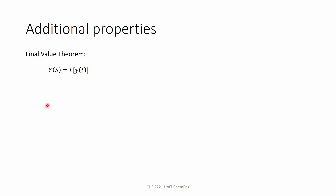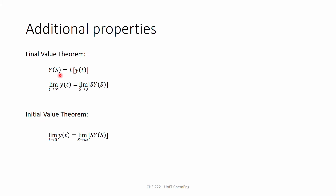The first property is called the final value theorem. What it says is: if we have a function capital Y(S), which is the Laplace transform of little y(t), and if we want to know the value of little y as time approaches infinity, we really don't need to take the inverse Laplace transform of Y(S). We can use this property, which says the limit of S·Y(S) as S approaches 0. In the same manner, we have the initial value theorem, which says the value of y(t) as t approaches 0 is equal to the limit of S·Y(S) as S approaches infinity.